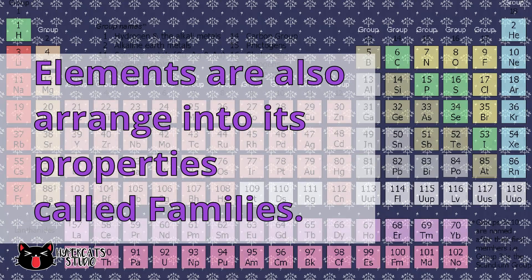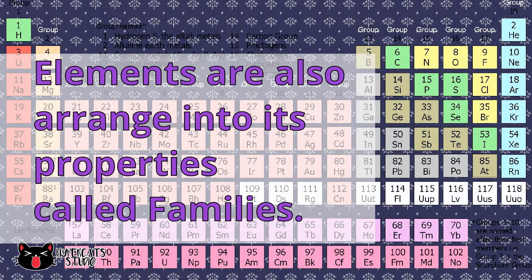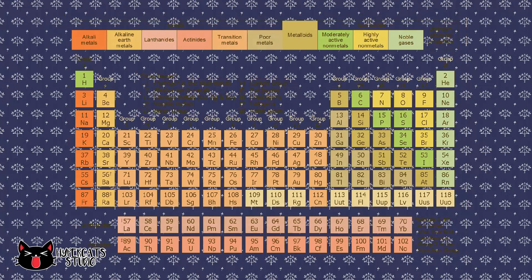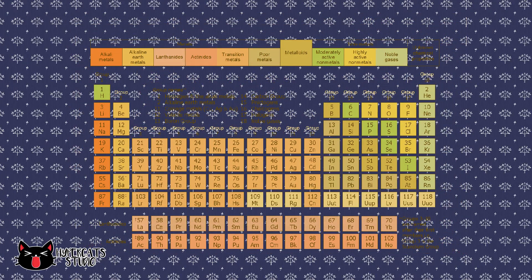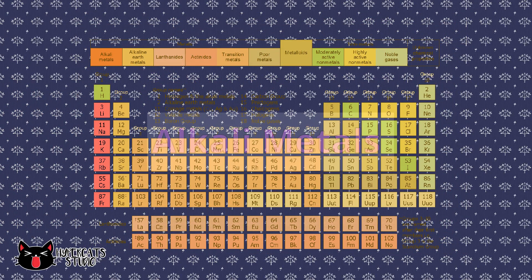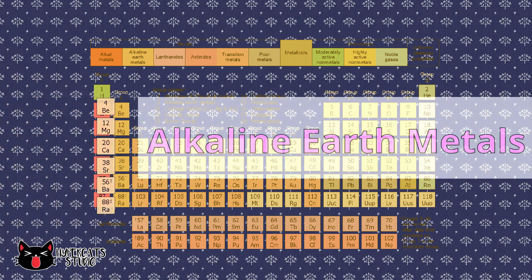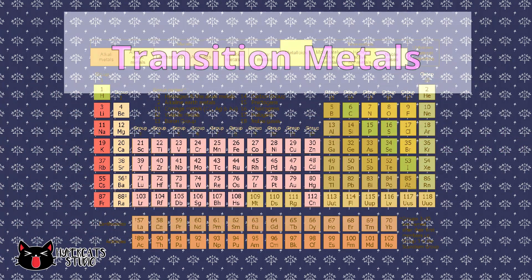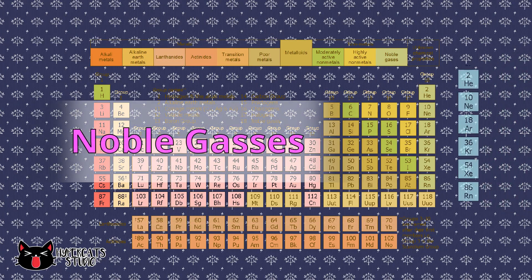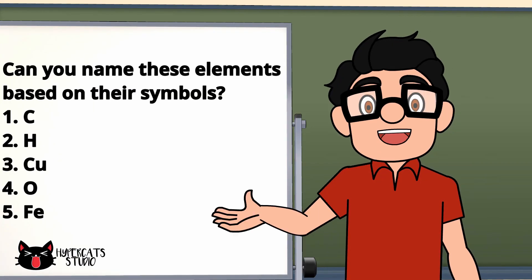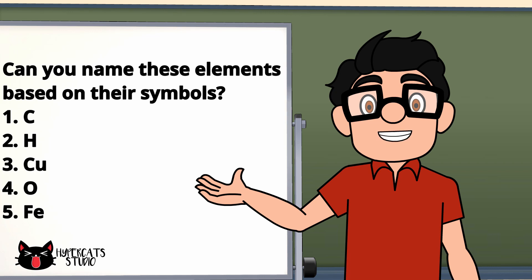Elements are also arranged into groups based on their properties, which are called families. Some known families of elements on the periodic table are alkali metals, alkaline earth metals, transition metals, halogens, and noble gases. Can you name these elements based on their symbols?